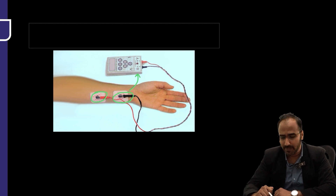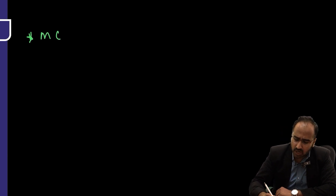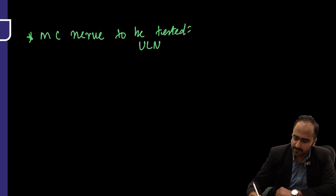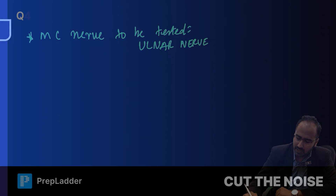While placing the electrode, the most common nerve tested for neuromuscular monitoring is the ulnar nerve — that is the nerve being tested here.